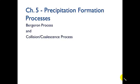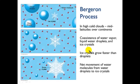Hi class. I wanted to talk a little bit about the processes that form precipitation in clouds. The two main processes we're going to look at are the Bergeron process and the collision coalescence process. So let's start first with the Bergeron process.